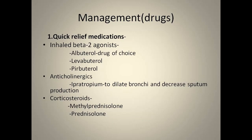In the management of asthma, drugs are classified into short-acting or quick-relief medications and long-term maintenance drugs. For quick relief, examples include inhaled beta-2 agonists such as albuterol, levalbuterol, and pirbuterol; anticholinergics like ipratropium to reduce mucus secretion; and corticosteroids such as methylprednisolone and prednisolone to decrease the inflammatory process.